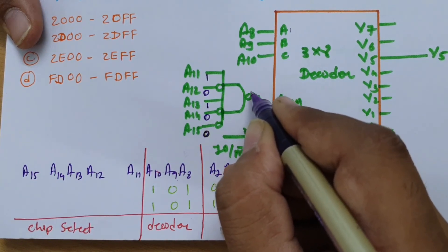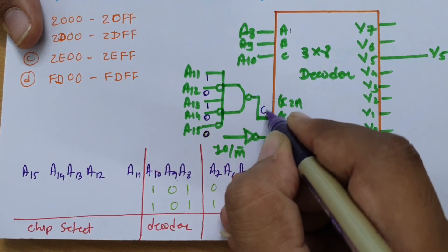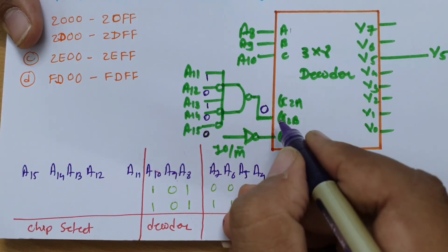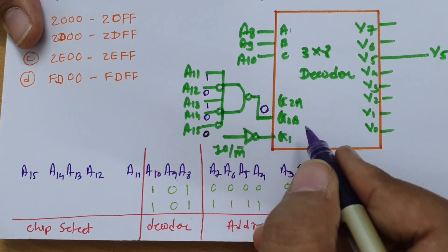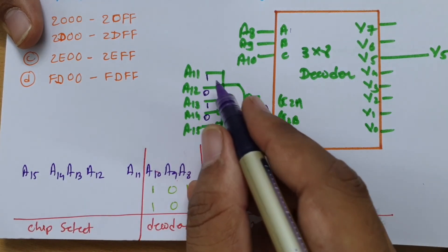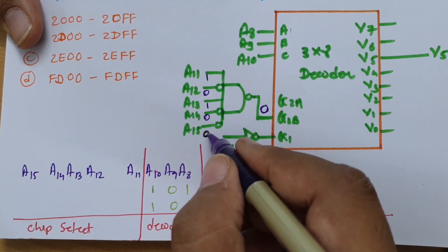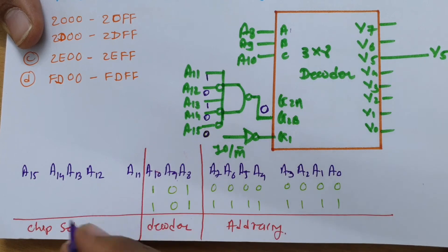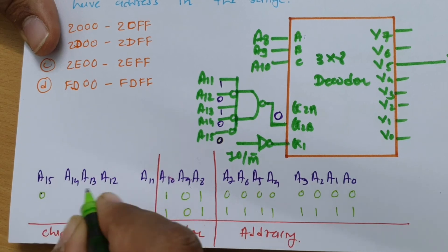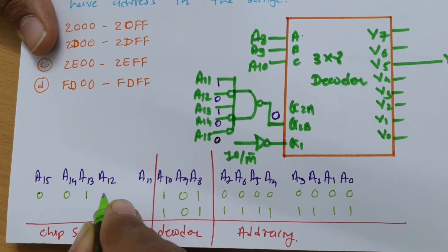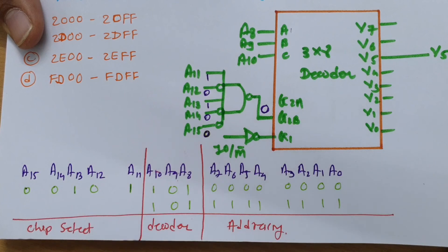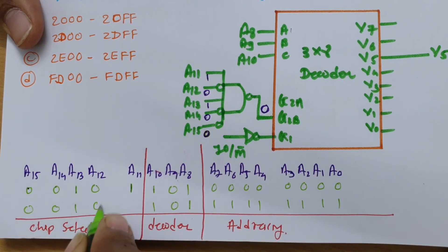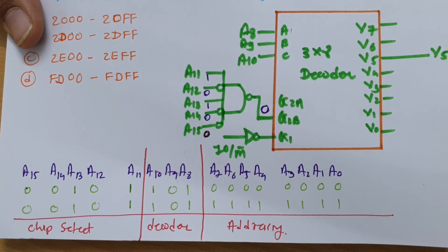Looking at the NAND gate connection for the chip select: providing inputs 0, 0, 1, 0, 1 through the NAND gate produces an active low signal. Since G2B is active low, the chip gets selected when the output is 0. This means A15=0, A14=0, A13=1, A12=0, and A11=1 — giving the pattern 00101.